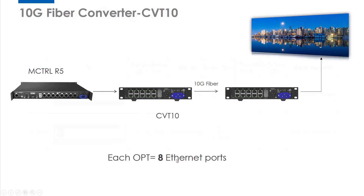This structure shows CVT10 working with M-Control R5, which has 8 Ethernet ports. So each OPT port handles 8 Ethernet ports. Not only for M-Control R5, but also processors like M-Control 4K with 16 ports and M-Pro-UH-Jr with 16 ports — when these work with CVT10, each OPT port of CVT10 handles 8 Ethernet ports.